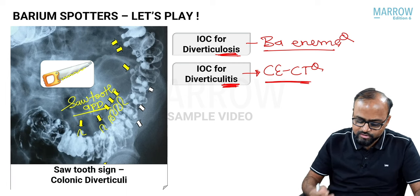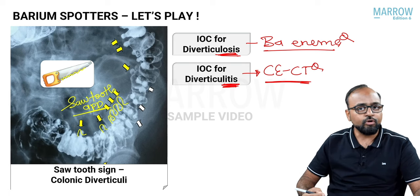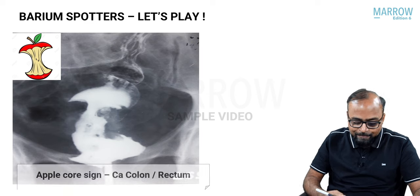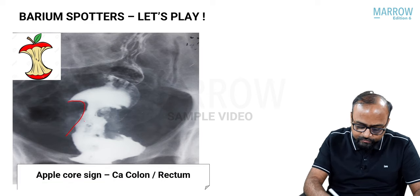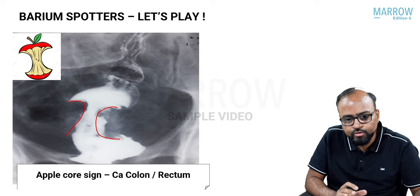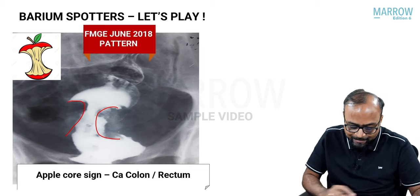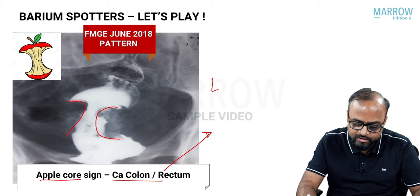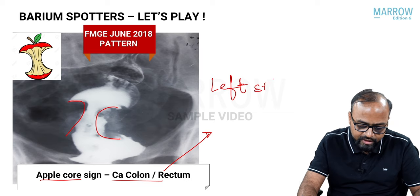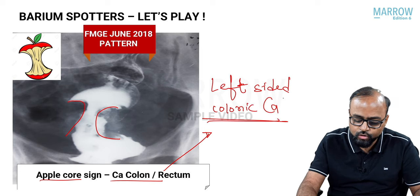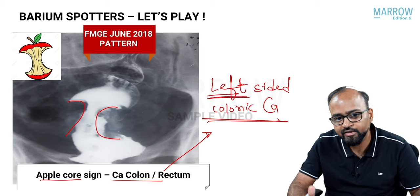The saw tooth sign is seen in colonic diverticula. A patient presenting with constipation and an apple core type filling defect along the colonic wall in the distal sigmoid colon or rectum — this is called the apple core sign of CA colon. Remember, this is more predominantly seen in left-sided colonic cancer.